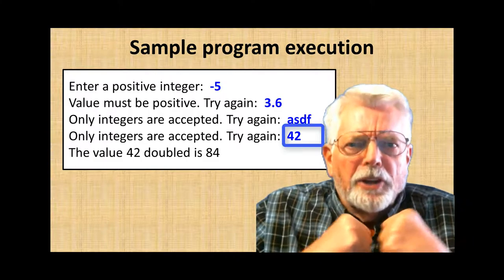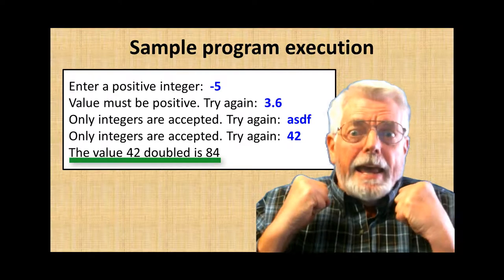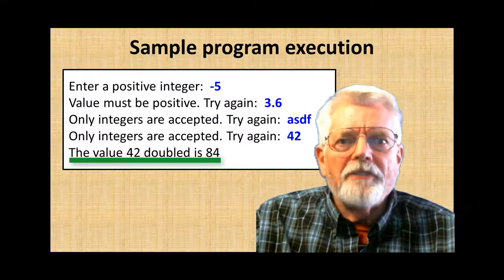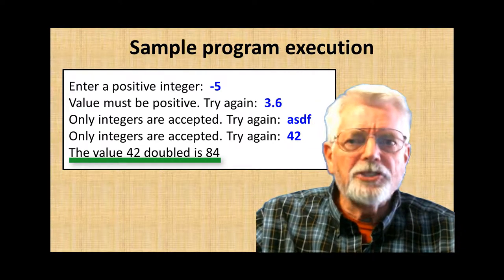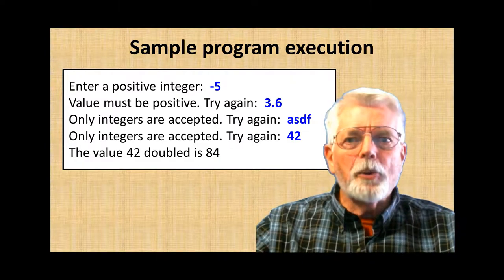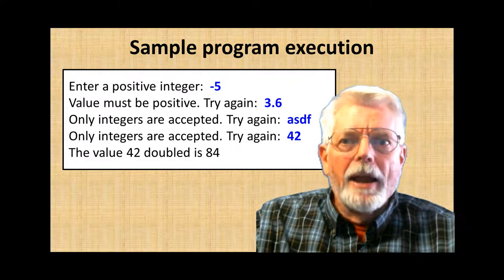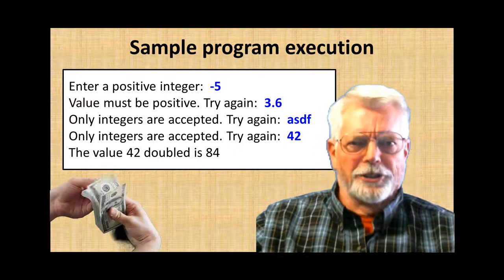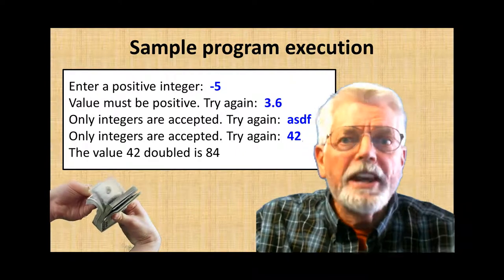It had better accept the number 42. Yeah, it worked and responded with the value 42 doubled is 84. I could make a fortune selling this program as the latest app. I could advertise it as see what would happen if you doubled your income.